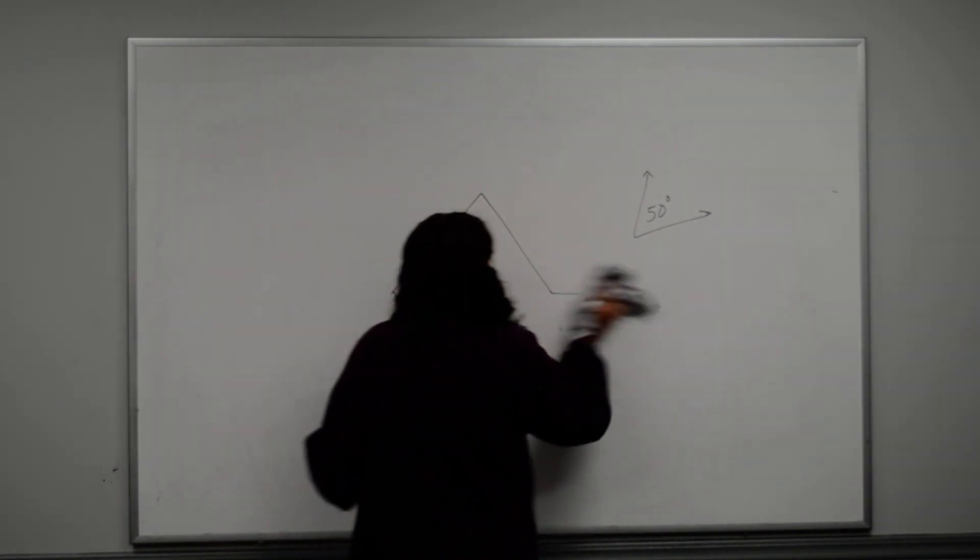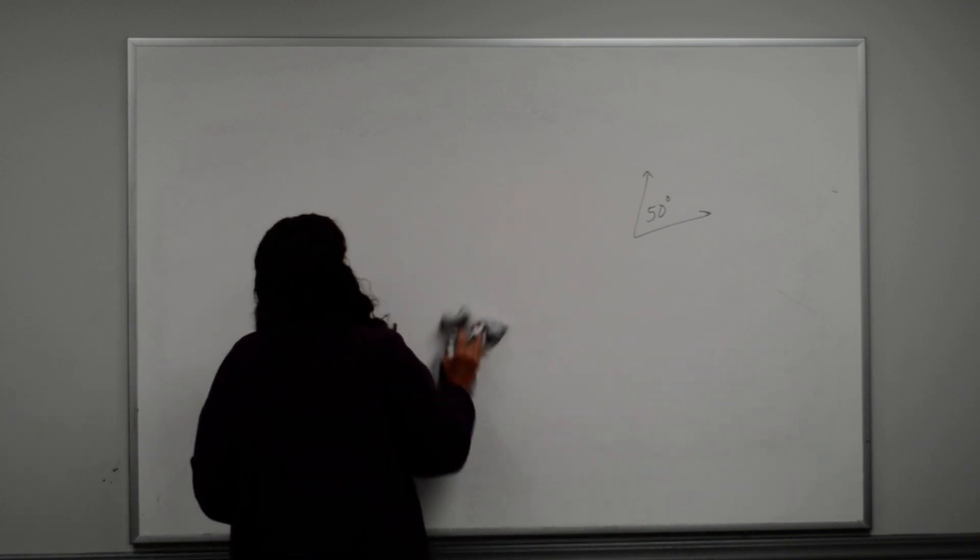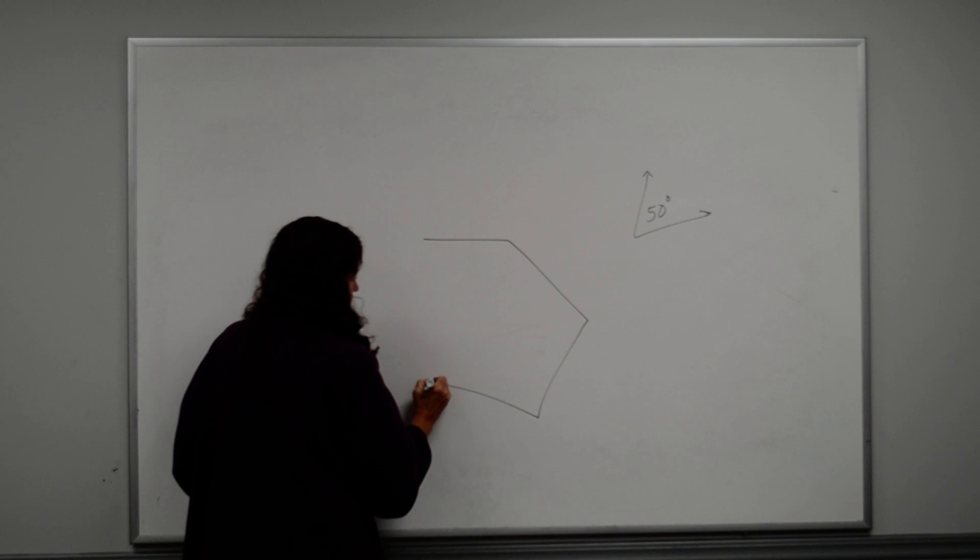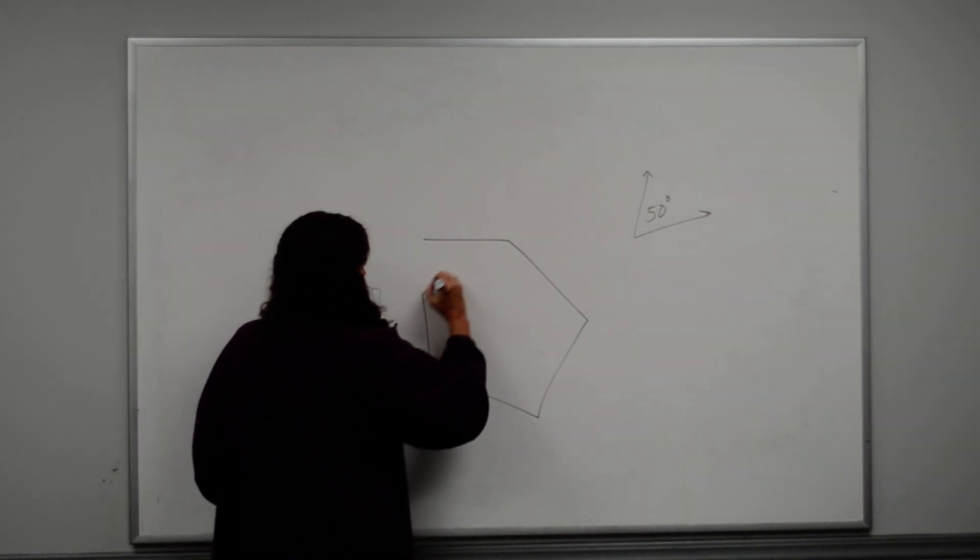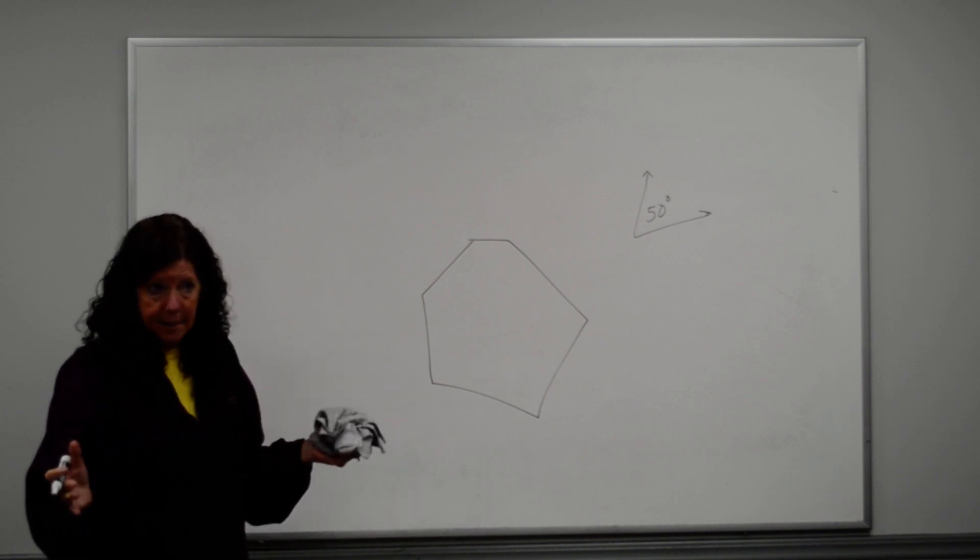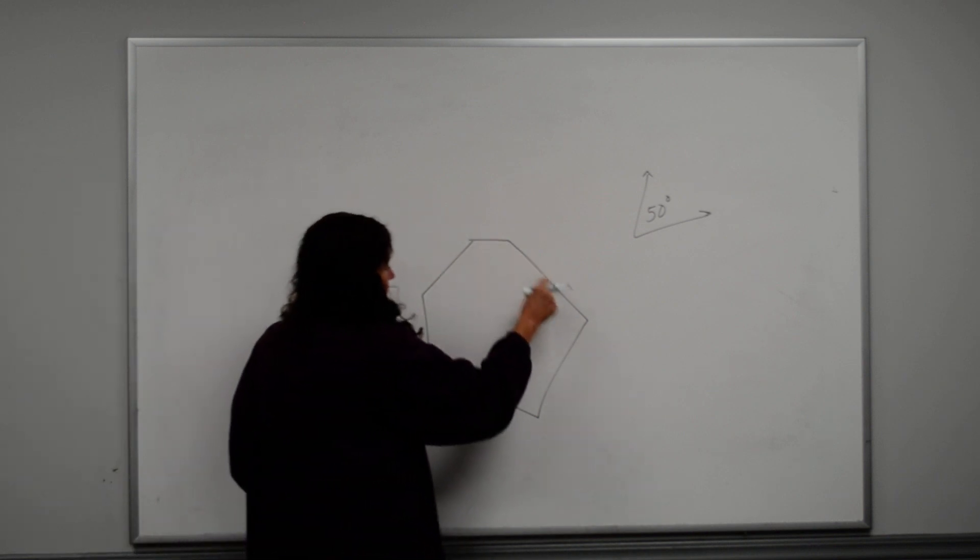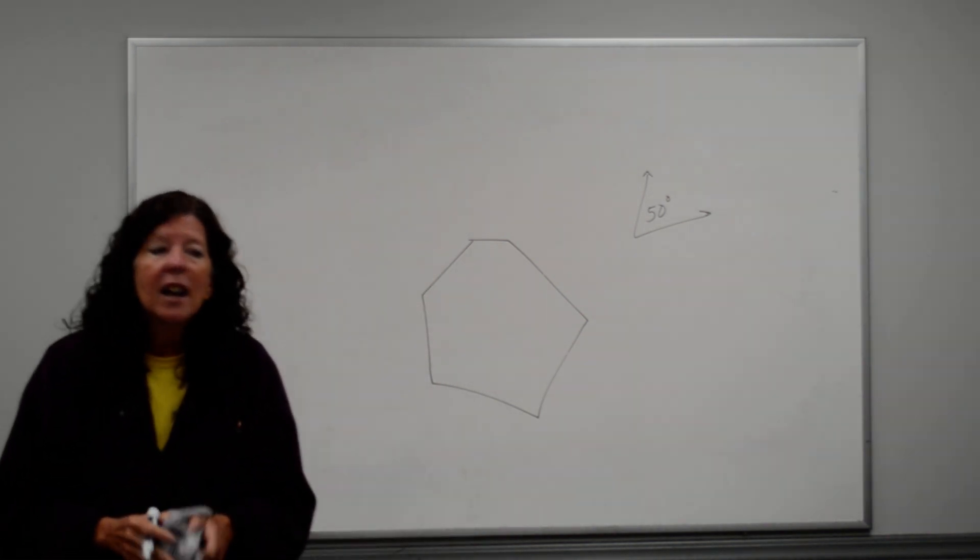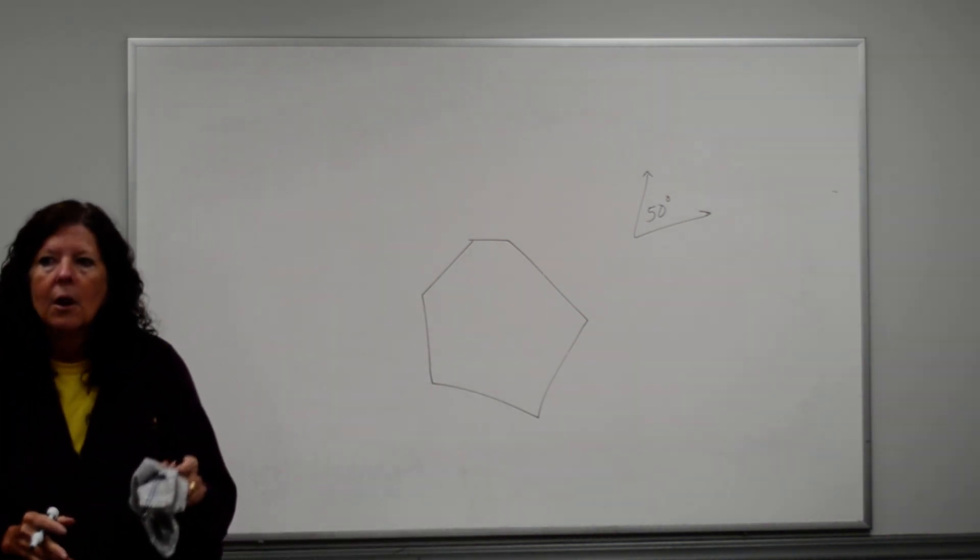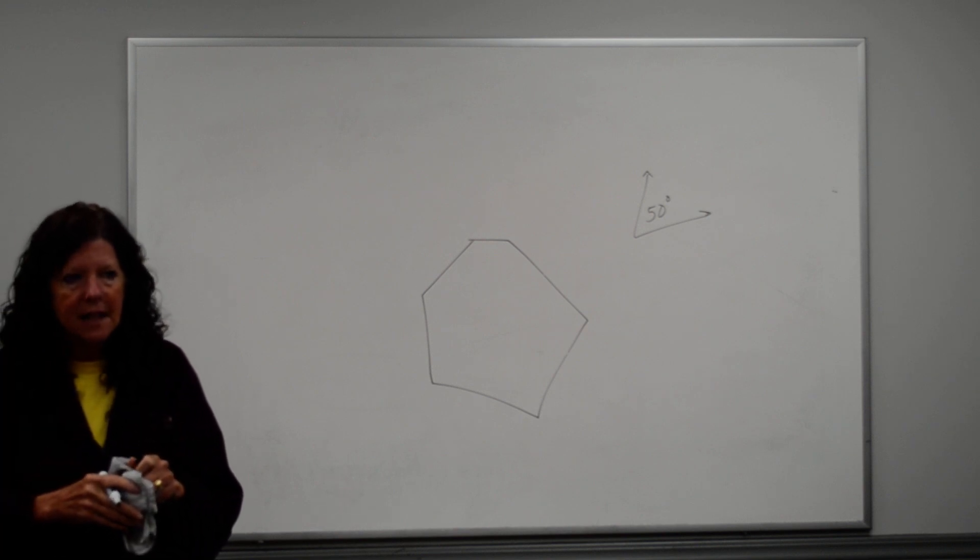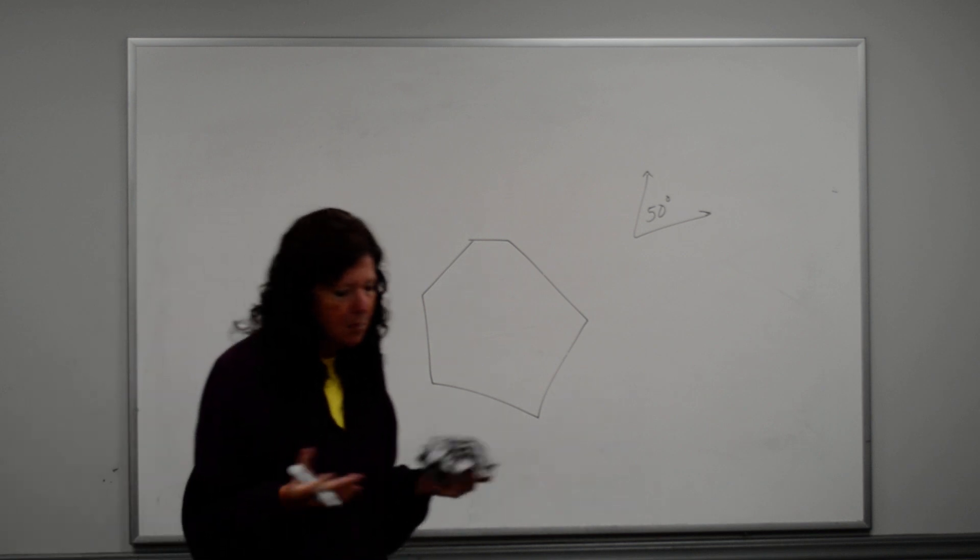But if you have a convex, which is what we normally think of when we think of polygons. Okay? Let's say I have that. That is a convex polygon. So one, two, three, four, five, six. It's a hexagon. It is not a regular hexagon, though. For it to be regular, it means all of these sides have to have the same measurement, and all the angles have to have the same measurement.